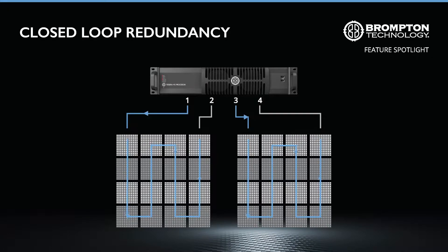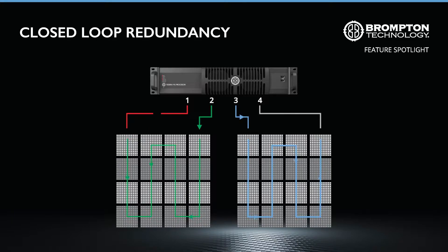Closed loop redundancy works by creating a connection loop from the processor to the panels and back to the processor. This enables the panels to receive their signal from either end of the connection loop. Should the primary connection of the loop — in this case connection 1 — experience either a fault or communication error, the processor will immediately switch to sending the signal through connection 2. This typically takes a single frame, making it imperceptible to the human eye.